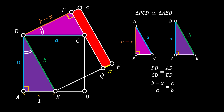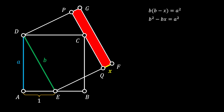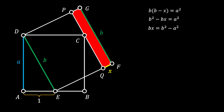Substituting our values, we get that (b minus x) over a must equal a over b. Cross-multiplying gives us b times (b minus x) equals a squared. Expanding and simplifying: b squared minus bx equals a squared, so bx equals b squared minus a squared.